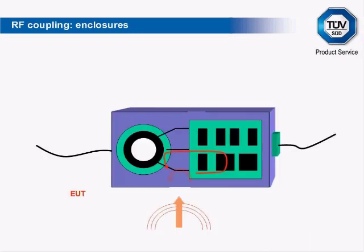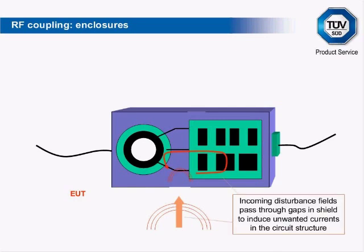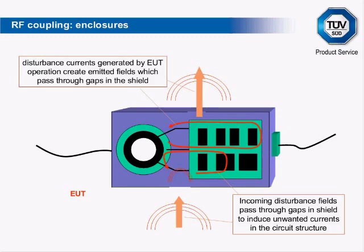The counterpart to coupling via cables is coupling via the product enclosure. Here, fields interact directly with conducting structures inside the enclosure — wires, PCB tracks, and even the components themselves. The extent of interaction is determined by the geometry and size of the conductors, with long or widely separated tracks coupling greater amounts of energy. A shielded enclosure reduces this interaction, but no shield is perfect — gaps or apertures in the shield will allow fields to penetrate in both directions, particularly coupling with structures close to the gap. Enclosure coupling predominates at frequencies whose wavelengths are comparable to the enclosure's dimensions.